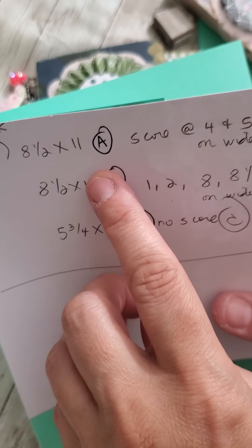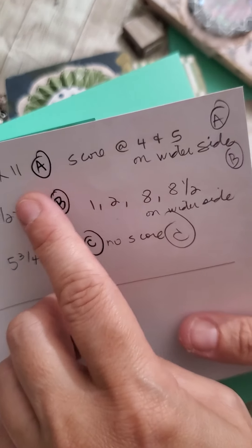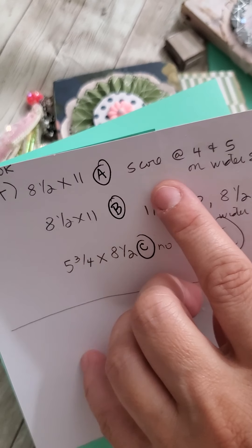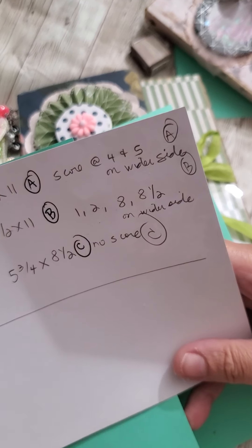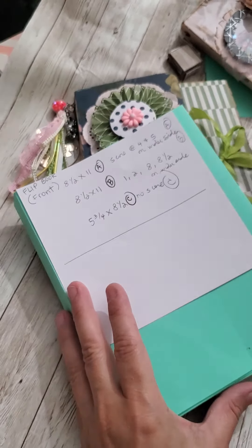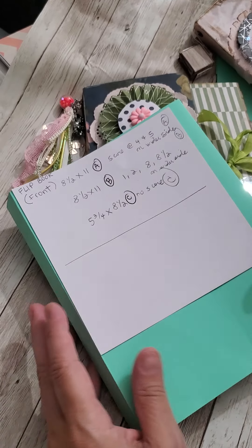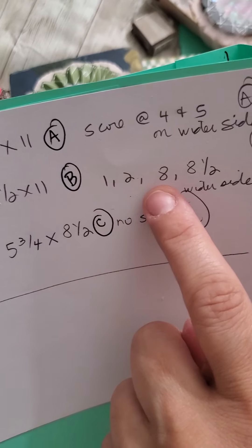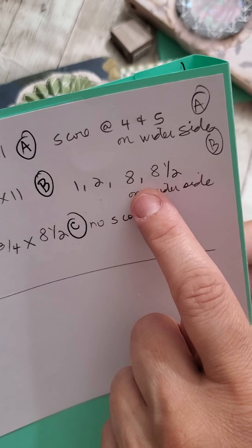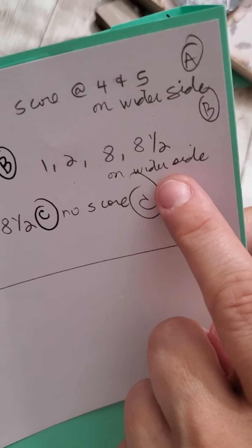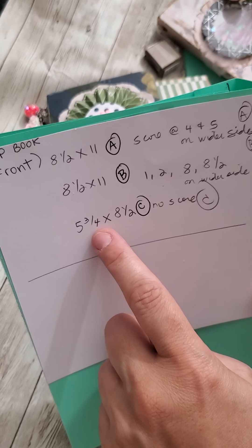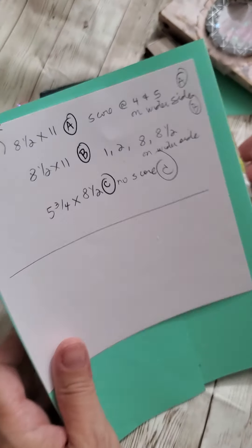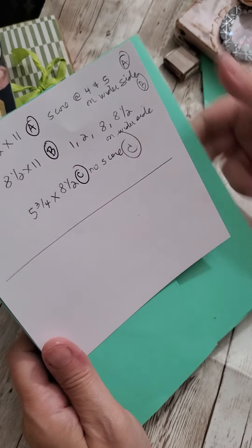So, and then the way you're going to score it, and I'll show you the real, the way, how it looks, is on the first one, we're going to call it A. You're going to score it at 4 1/4 and 5 1/5 on the wide side. So on this side, not the tall side, but on the wide side. And then on the second one, you're going to score it 1 1/2, 2 1/8, and 8 1/2, again, on the wider side. And on the third piece, which is 5 3/4 and 8 1/2, there's no score involved.